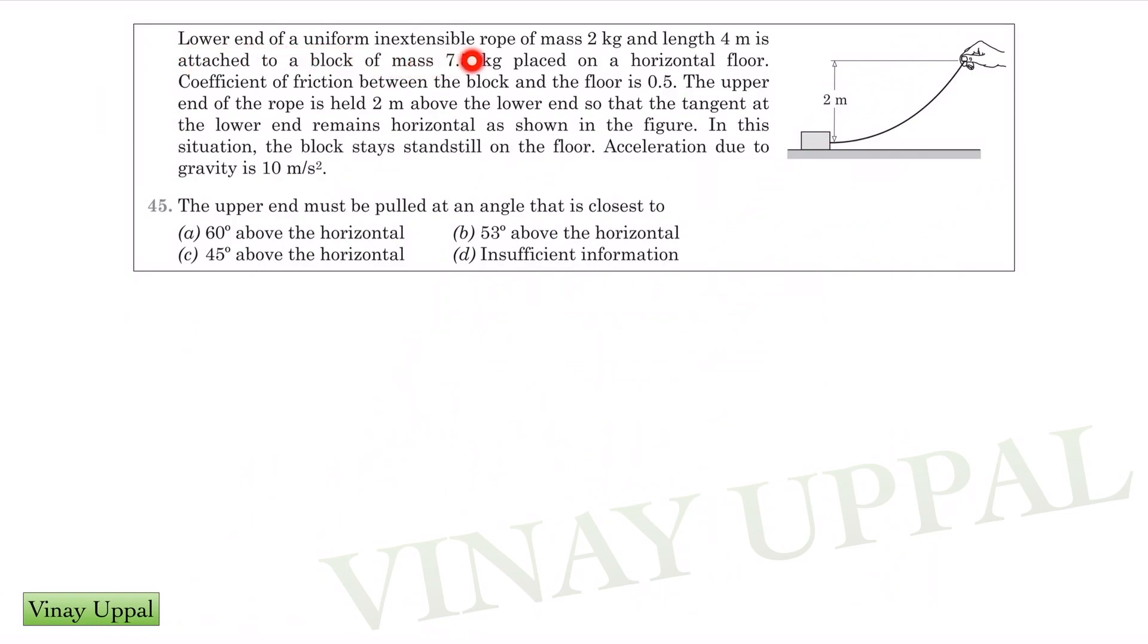Lower end of a uniform inextensible rope of mass 2 kg and length 4 meters is attached to a block of mass 7.5 kg placed on a horizontal floor. Coefficient of friction between the block and the floor is 0.5. The upper end of the rope is at 2 meters above the lower end.